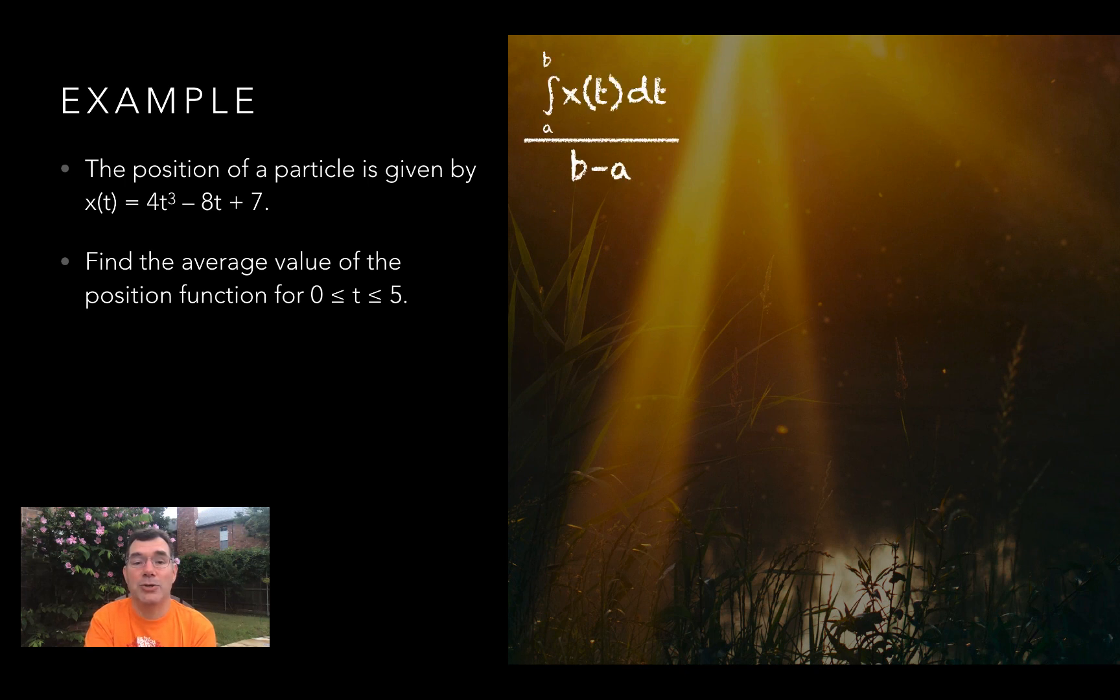then I would just use my formula. I'm using x of t instead of f of x because of the context of the problem, but the process is the same. I'm going to be integrating 4t cubed minus 8t plus 7 from t equals 0 to t equals 5, and I'm going to put that over 5 minus 0, because those are the endpoints of my interval.